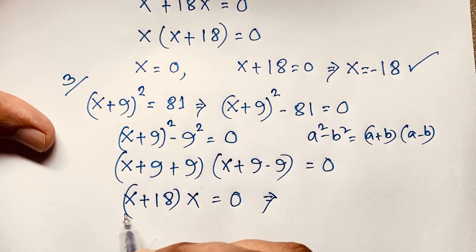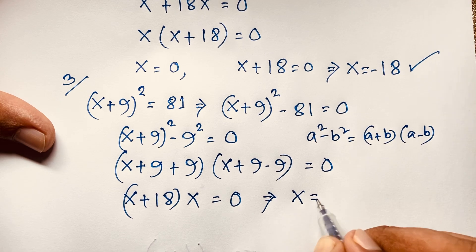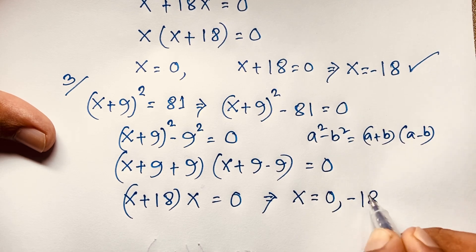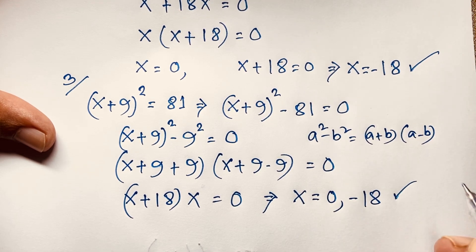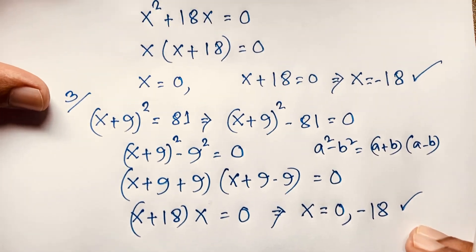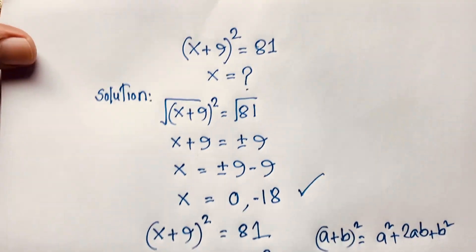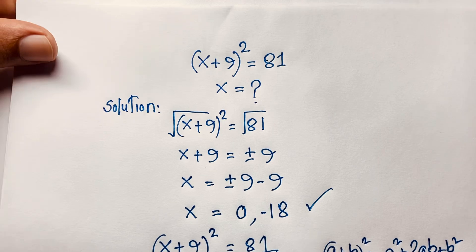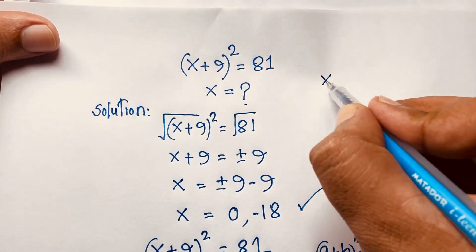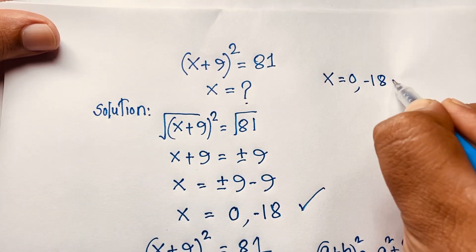This is the same case as before. So it will be x = 0 and x = −18. This is our final answer. We find x = 0 and x = −18.